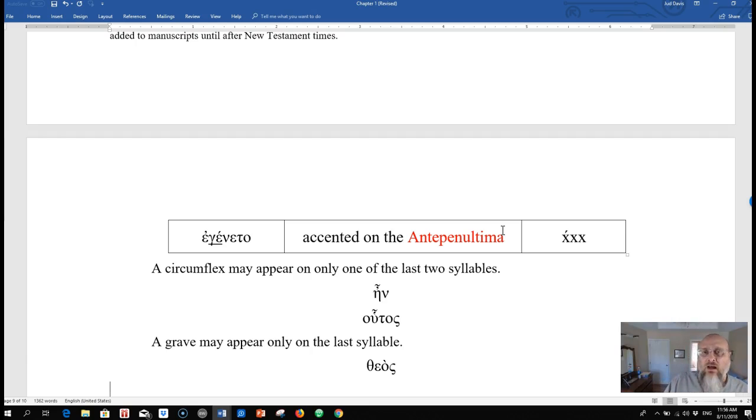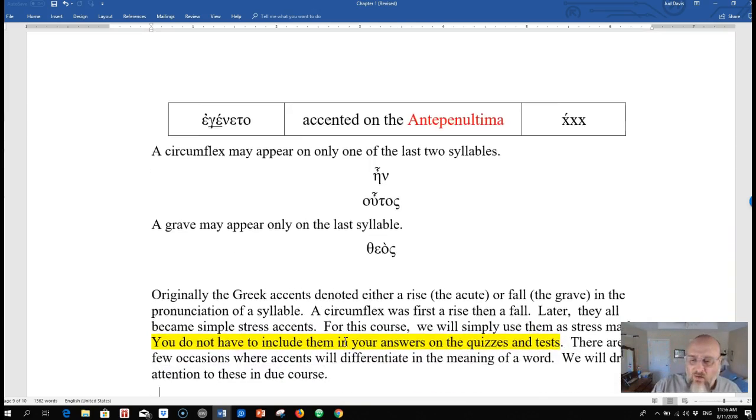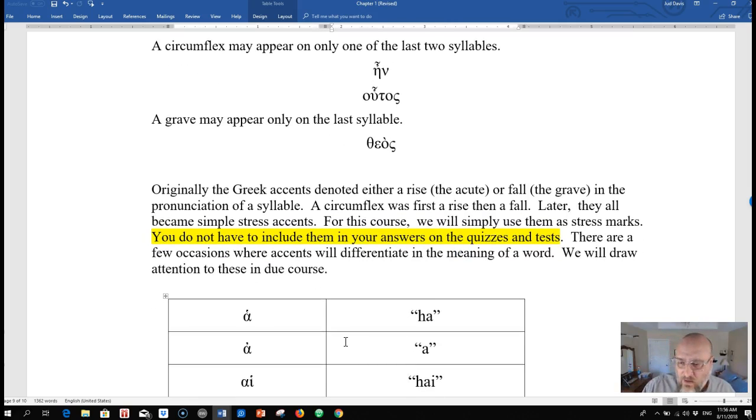So if you have a word that's 18 syllables long, you can only accent one of the three: ultima, penultimate, antepenultimate. Now when we come to the circumflex, a circumflex can only fall on the last two. So last three is for everything, but the circumflex is just the last two. So this is on the last one, the only syllable en, and then houtos on the next to the last. And the grave accent can only appear on the last syllable. So you can't have a grave as an antepenultimate or penultimate accent, only on the ultima.